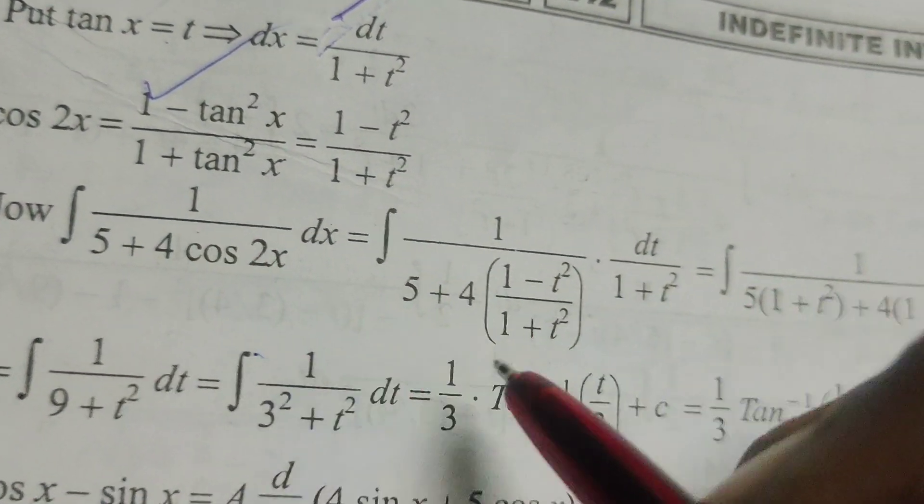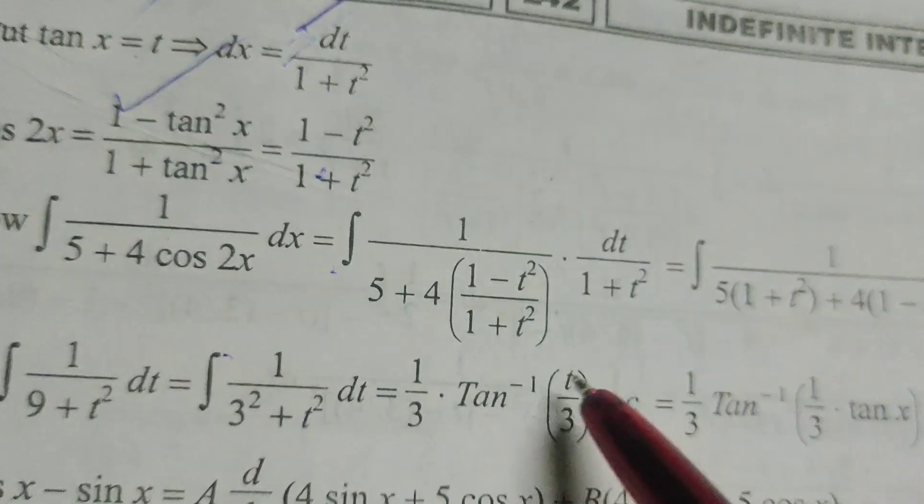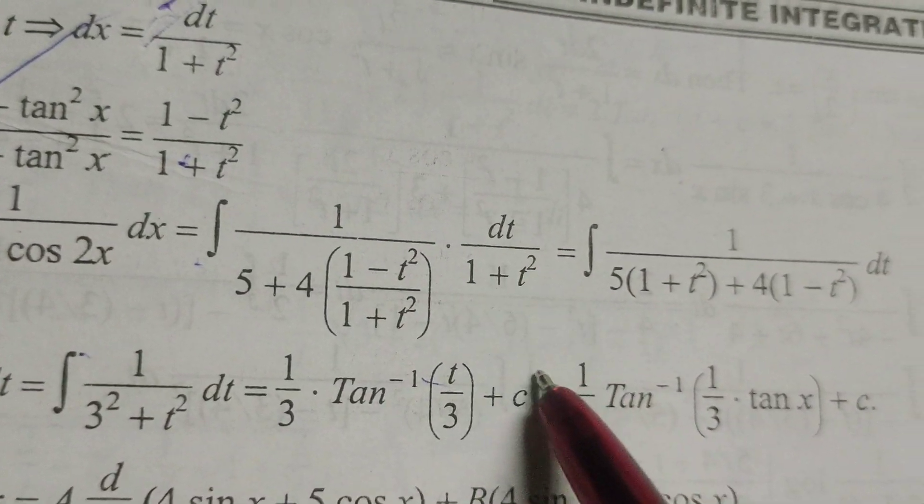Integral of 1 by 5 plus 4 into 1 minus t square by 1 plus t square. In place of dx, substitute dt by 1 plus t square.